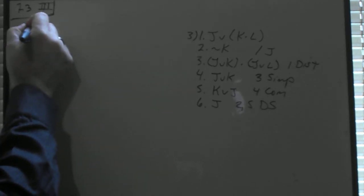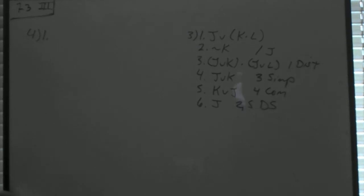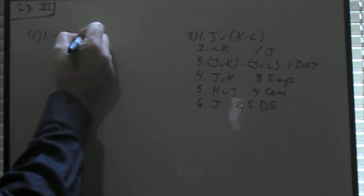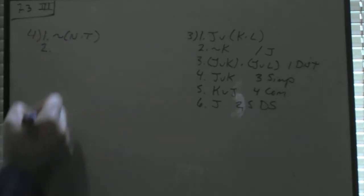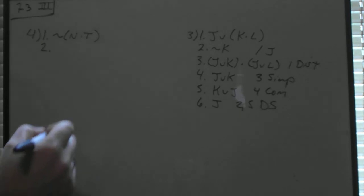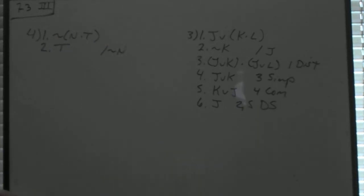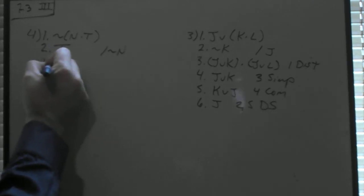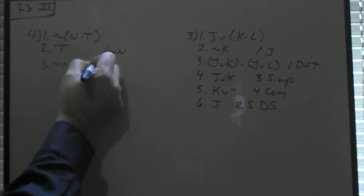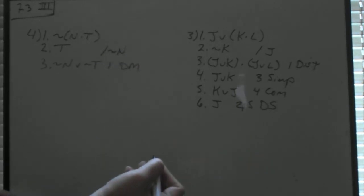Number 4, we have not N and T. Number 2 is T, therefore not N. Okay, so looking at number 4, the first line, I see not T and N, and that looks like a DeMorgan's. So using DeMorgan's on not N and T, it becomes not N or not T from line 1 through DeMorgan's.